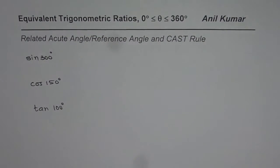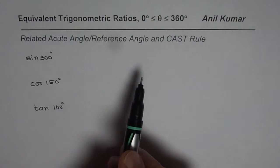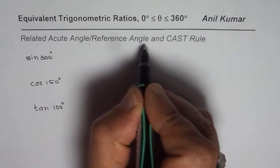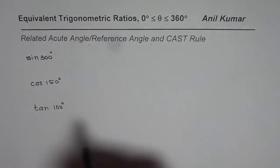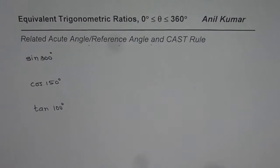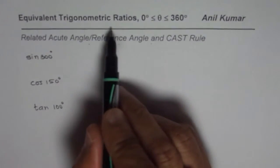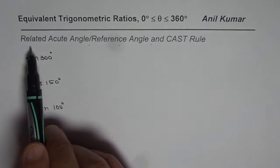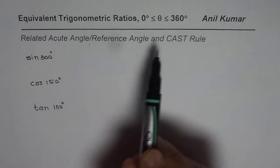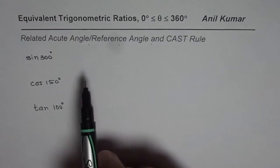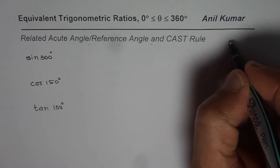Now how to find these equivalent ratios? Remember there could be more than one solution — we could have 1, 2, 3, even 4 solutions for each one. To find equivalent trigonometric ratios we take help of related acute angles and the CAST rule. These two things help us get the answer.